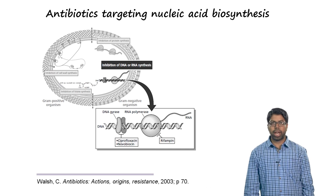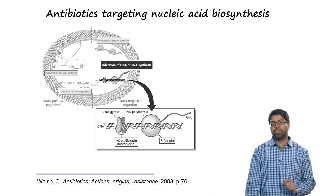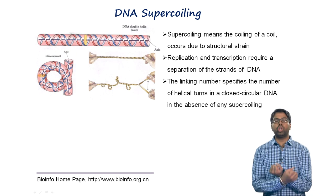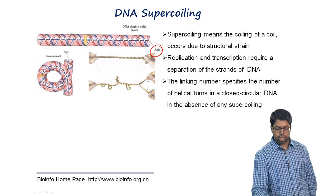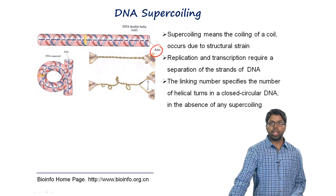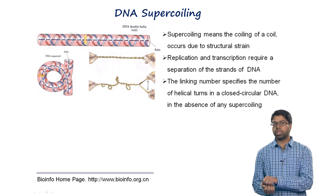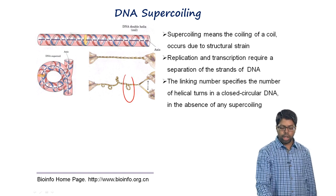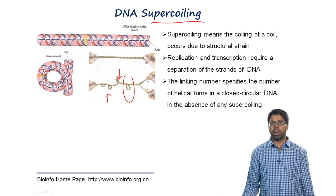Let us start with antibiotics that target nucleic acid biosynthesis, but before we jump into this, let me make you familiar with two important concepts: DNA supercoiling and topoisomerases. The DNA has two helical strands wrapped around each other. During replication and transcription, these strands must be separated, and this process can induce strain in the DNA leading to over-twisting or underwinding, called supercoiling — literally the coiling of a coil.